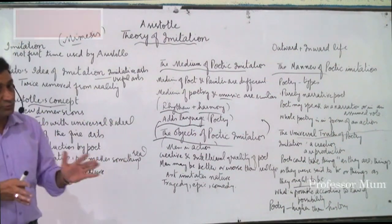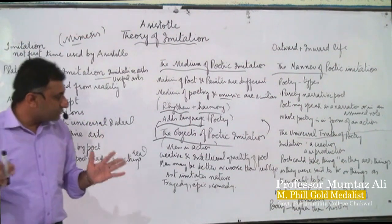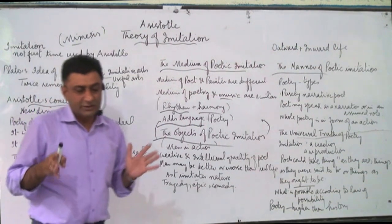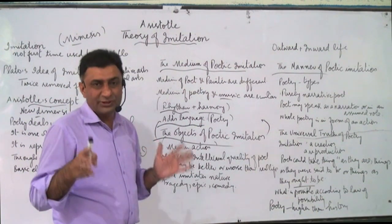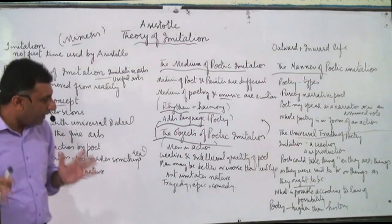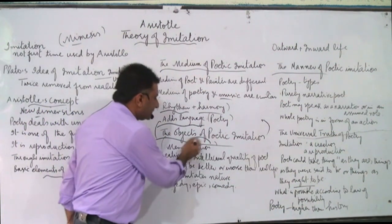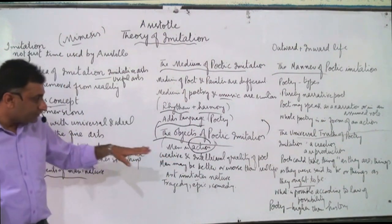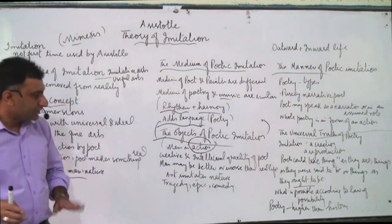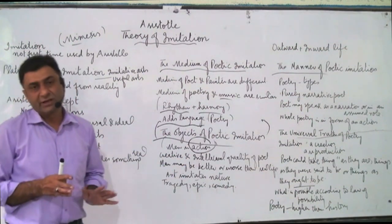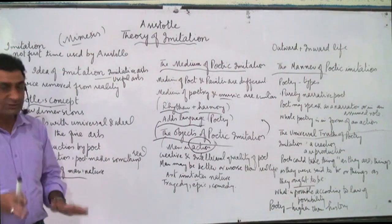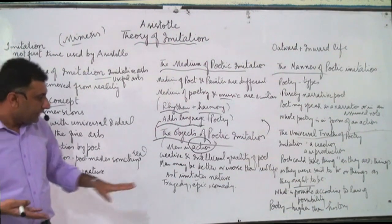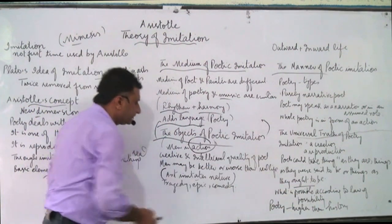Through this movement, poets teach people different lessons — how to live in society peacefully, how to flourish in life. It teaches social, political, moral, economical, and ethical values through action. This action means representation of life. Poetry is creative and intellectual in nature, and poets are creators — they produce something new; they are not just imitators. Art imitates nature, but it doesn't mean art just talks about things apparently seen by our eyes.